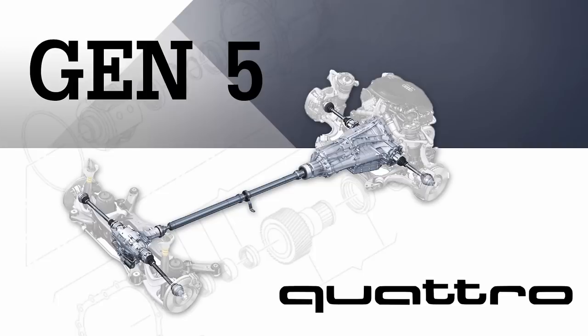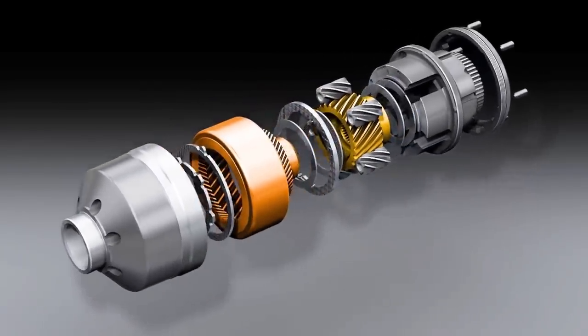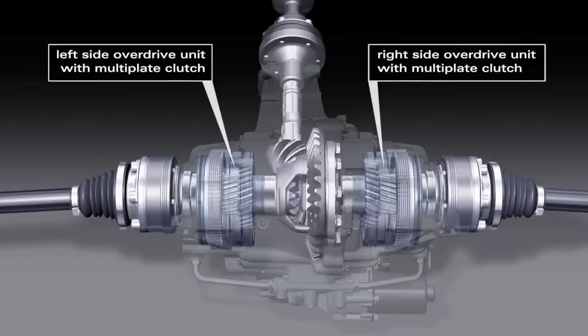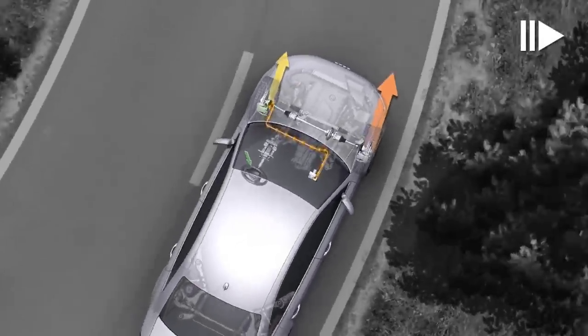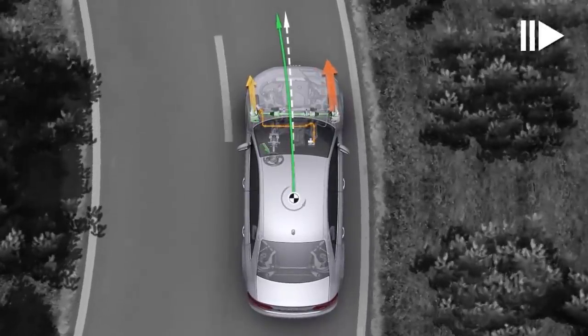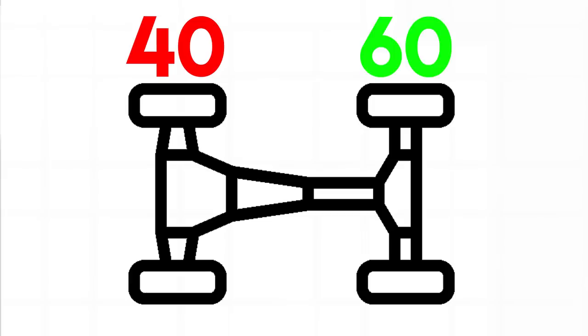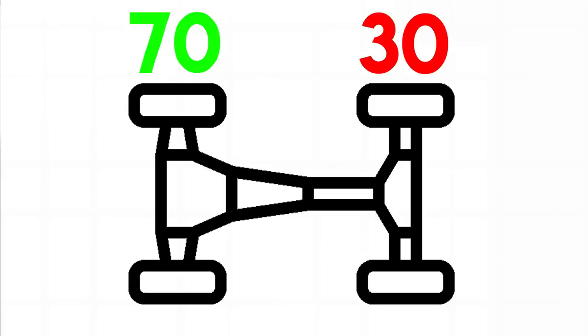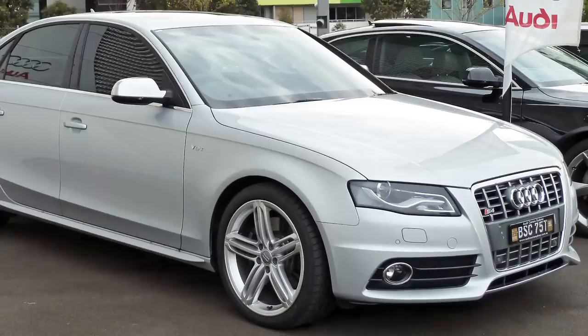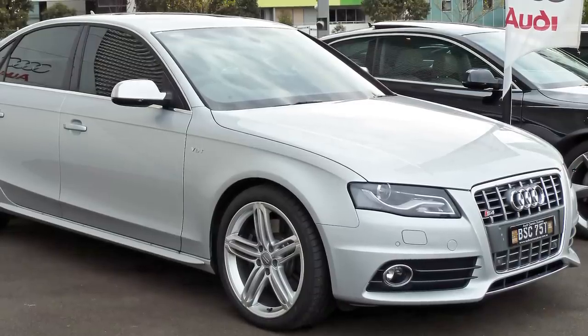Quattro 5 uses an updated torsion center differential and open front and rear differentials, with some models — like the S4 we have here — having an optional torque vectoring rear differential. Much like the Gen 4 system, this has EDL or electronic differential lock, which uses the ABS system to hold the brakes on the wheel with the least traction, sending power away from it. This vehicle has a power split of 40-60 as a default, with the ability to send up to 70% to the front or 85% to the rear. The Gen 5 system started around 2005 and became much more widely spread in the B8 Audi A4, S4, and current model vehicles.